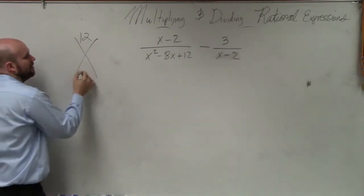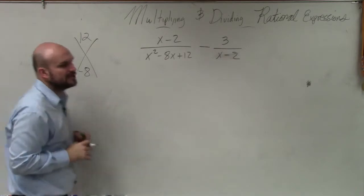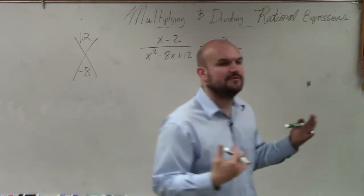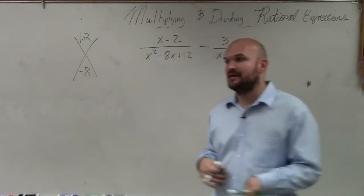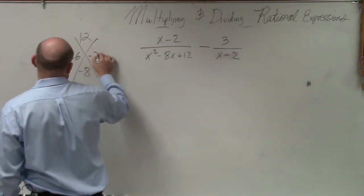So basically we're going to take 12 and negative 8. What I want to try to do is determine what two numbers multiply to give you positive 12 and add to give me negative 8. Negative 6 and negative 2.